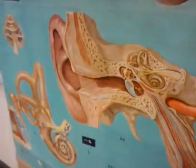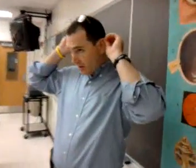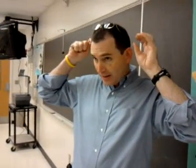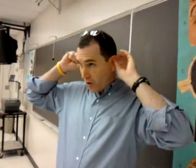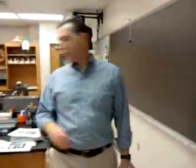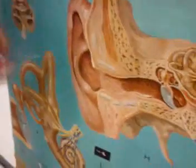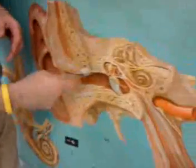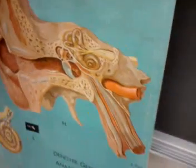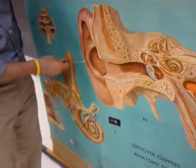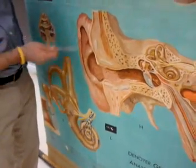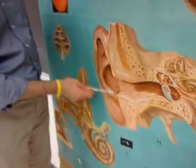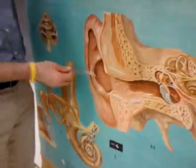We have the external ear structures. We have the pinna, which is this big outer structure. That leads into the external auditory canal. The ear is divided into the external ear, the middle ear, and the internal ear. The external ear includes the auricle or pinna. This is a hole in the cranium called the external auditory meatus, and then the external canal.